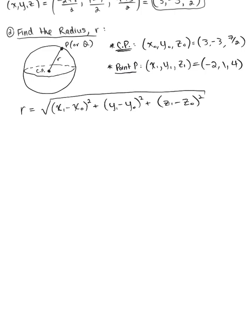Plugging our values in, we have the square root of (negative 2 minus 3)² plus (1 minus negative 3, so 1 plus 3)² plus (4 minus 7/2)².